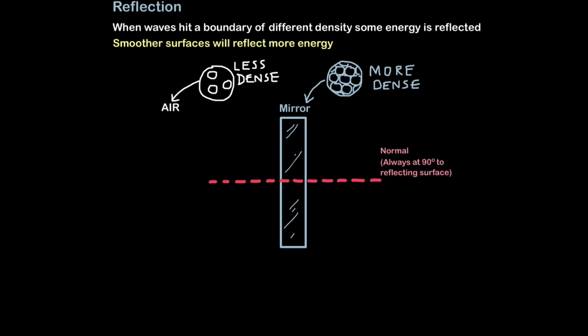I've drawn a dashed pink line here. This we call the normal. The normal is an imaginary line that's always drawn at 90 degrees, at right angles to the reflecting surface, or refracting surface as you'll see later. We draw normals just to work out angle relationships when it comes to reflection or refraction.